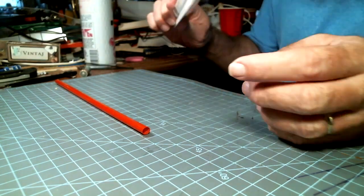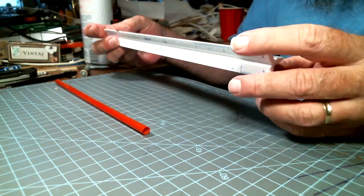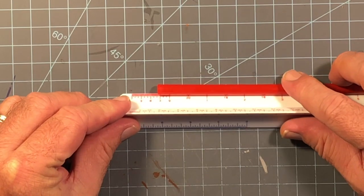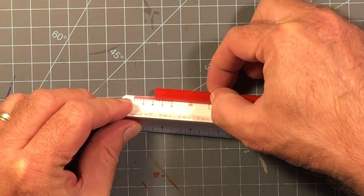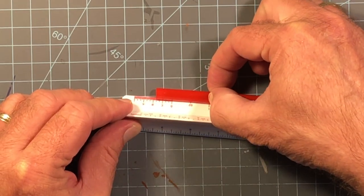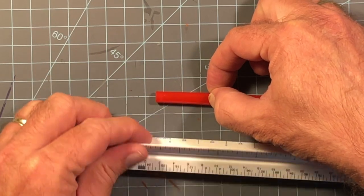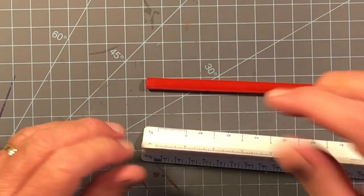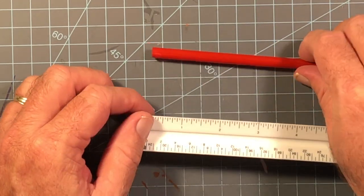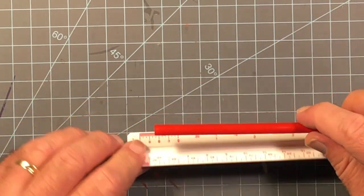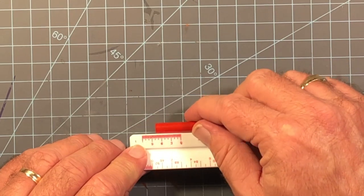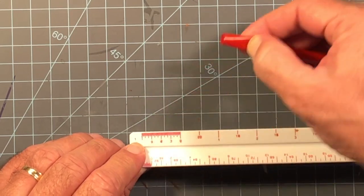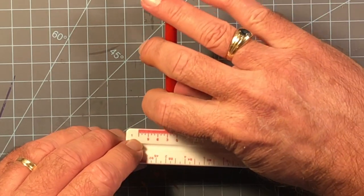If we're doing 1:12 scale, 16 inches would be that long, which is an inch and a half roughly, inch and a third actually. But 8 inches would be about that long. That's how wide it would need to be.